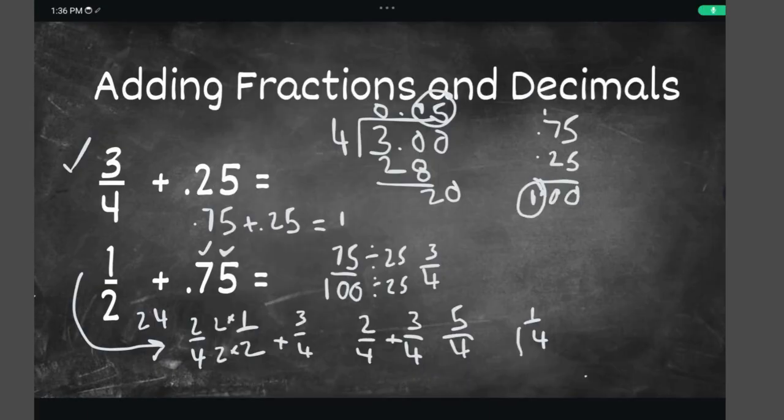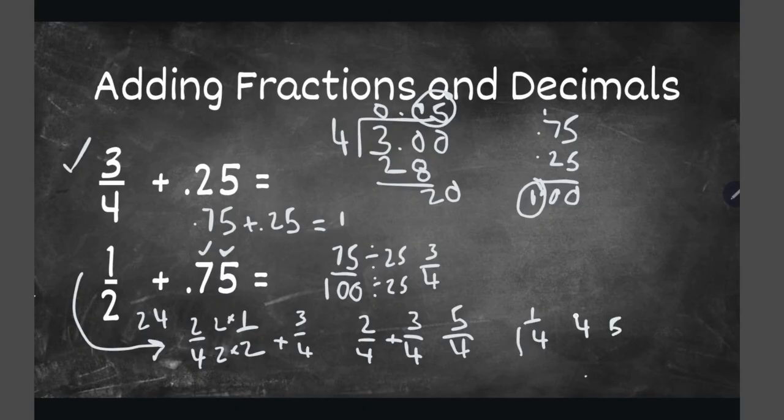Or we can convert it into a decimal. We'll divide 5 by 4. Let's place some placeholder zeros. 4 goes into 5 one time. 1 times 4 is 4. 5 minus 4 is 1. Bring down the 0. 4 goes into 10 two times.